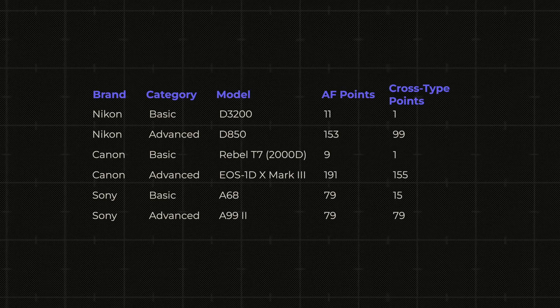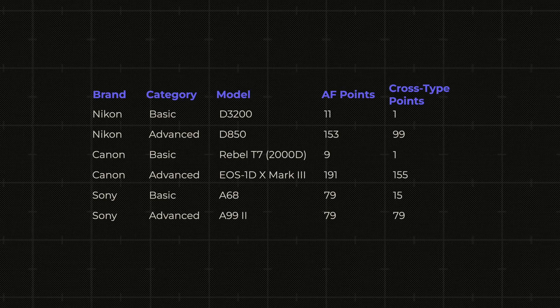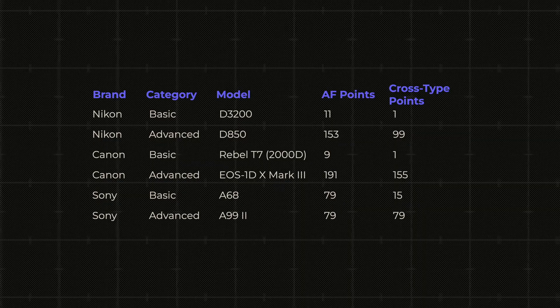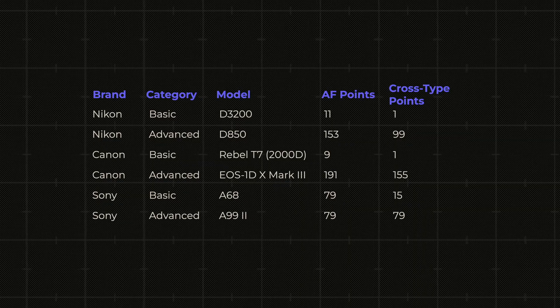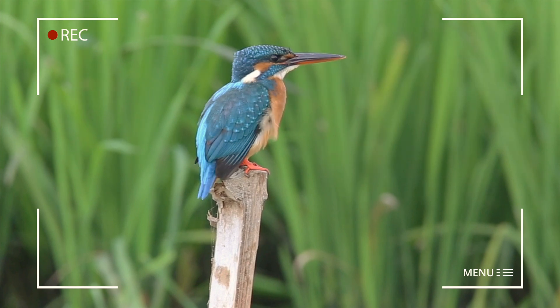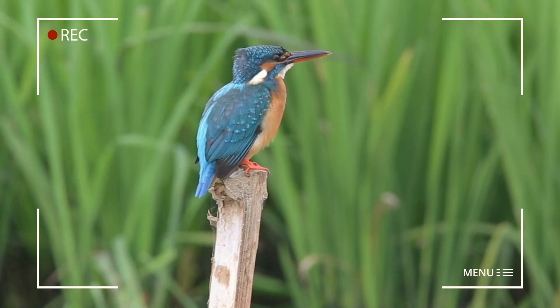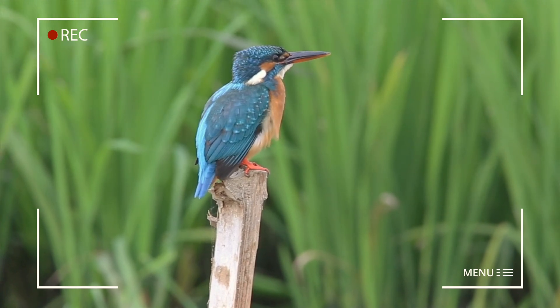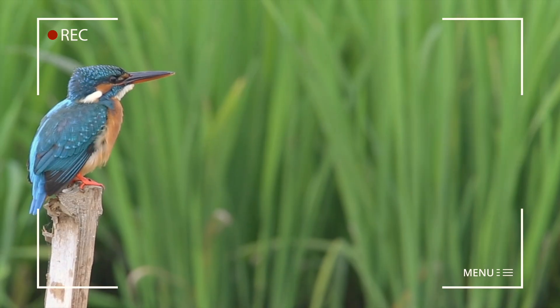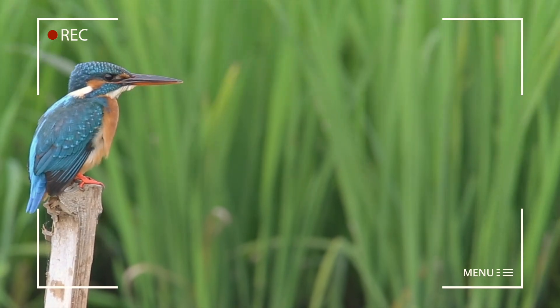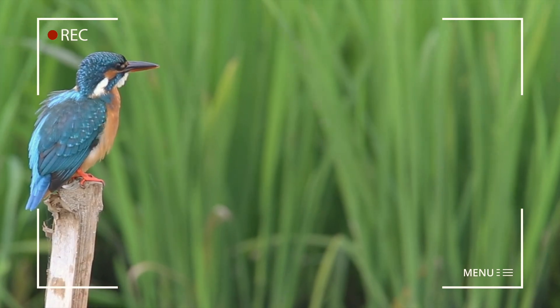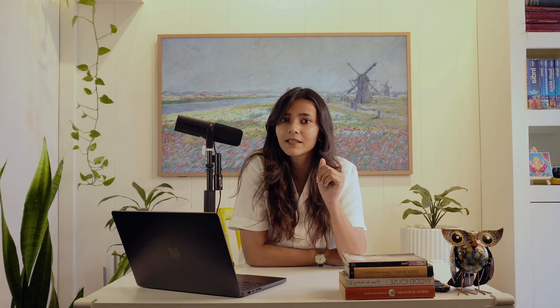If we include cross-type and line-type sensor information into our table, it tells us something very important: most cross-type sensors — our efficient sensors — are concentrated towards the centre of the frame. Therefore autofocus works better when the subject is at the centre versus when it is towards the edges. We are going to park this knowledge aside to learn a very important technique called the focus recompose technique, which we will cover in part two of this video.